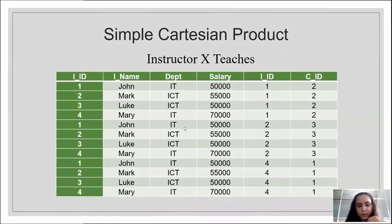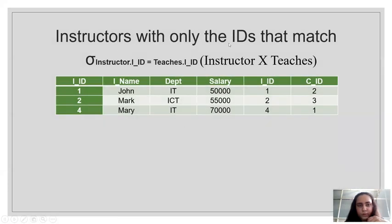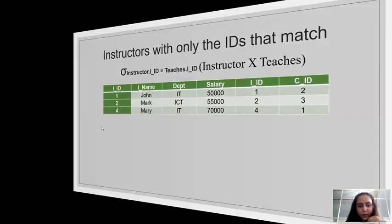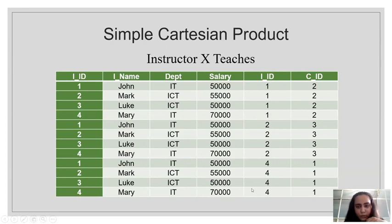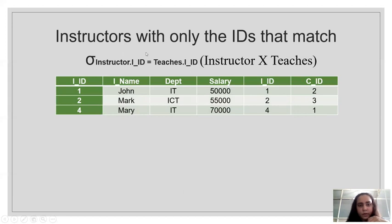First, we are going to find instructors with only the IDs that match. Looking at the table, I_ID one matches with one — we keep it. Two does not match with one — discard. Three does not match with one — discard. Four does not match — discard. Two matches with two — we keep it. Four matches with four — we keep it. In all, only three rows will be selected, and now that information seems a little more interesting.